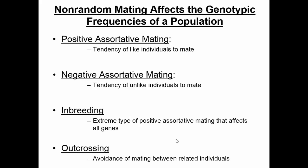Let's look at non-random mating first. There's positive assortative mating — the tendency of like individuals to mate — where 'like' could mean ethnicity, race, geography, or socioeconomic class. Negative assortative mating is the tendency of unlike individuals to mate. The extreme of positive assortative mating is inbreeding, where all genes are affected. Mating between siblings or first cousins is undesirable both socially and genetically. Outcrossing is the extreme of negative assortative mating — the avoidance of mating between related individuals.